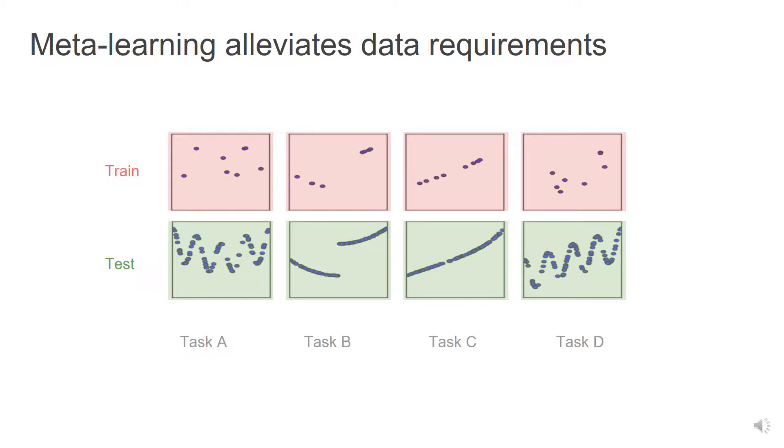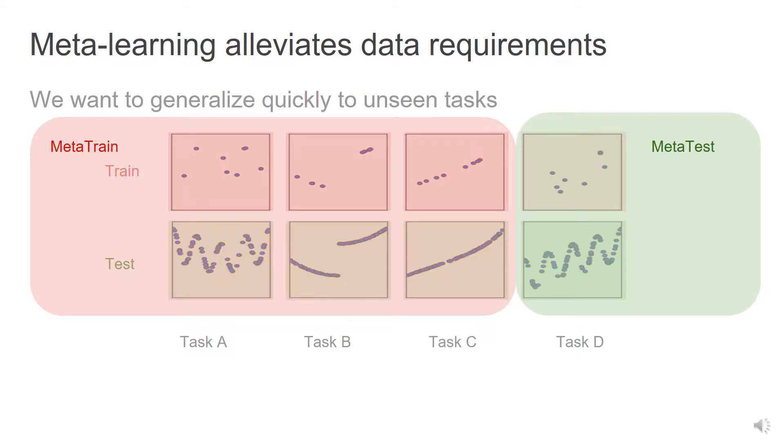The hunger of data of deep learning contrasts with humans' ability to learn from few examples. Meta-learning or learning-to-learn aims to bridge this gap by learning many different tasks. By attempting many tasks, we can learn an efficient learning algorithm that needs less data for a new task.